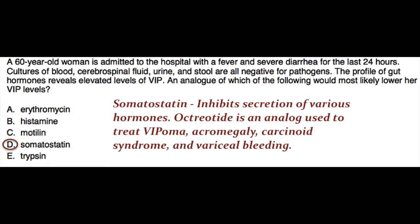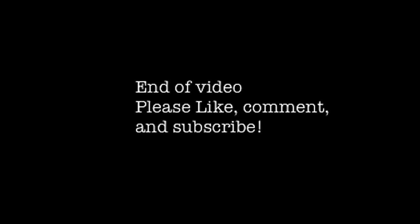Somatostatin is the best choice because it has a broad range of inhibitory effects, inhibiting GI secretions, slowing GI motility, and reducing splenic blood flow. Octreotide is an analog used to treat VIPoma, acromegaly, carcinoid syndrome, and variceal bleeding.